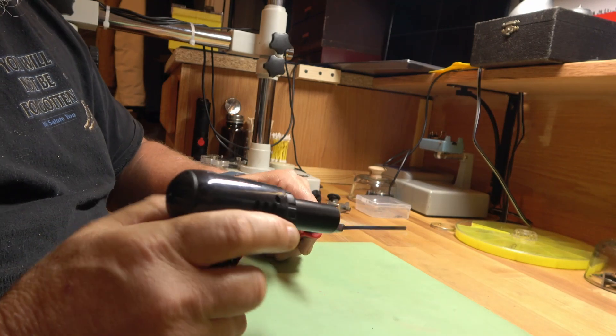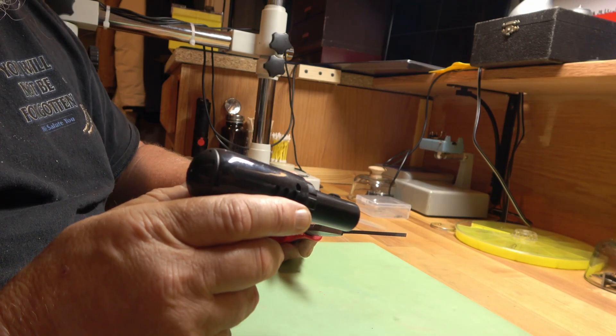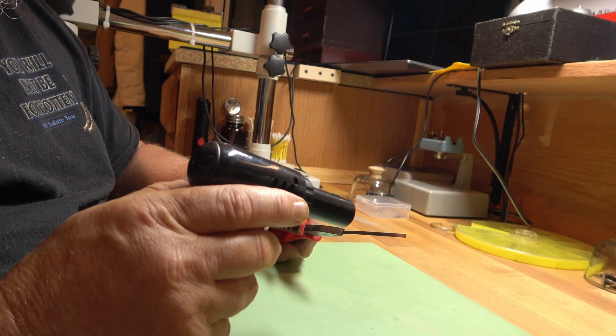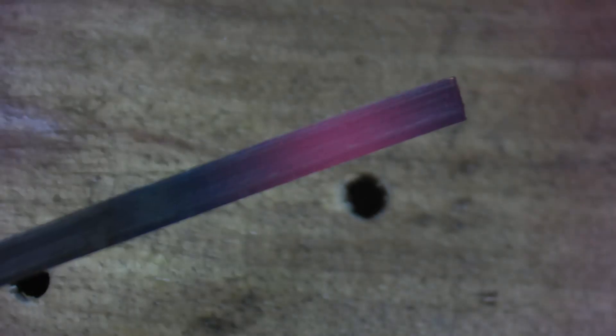Before I shape it, I also like to temper the steel to make it as soft as possible, which will make it a lot easier to shape.